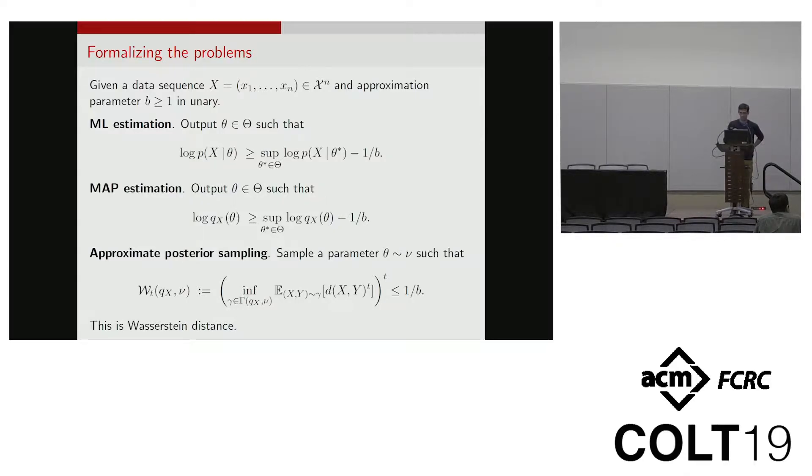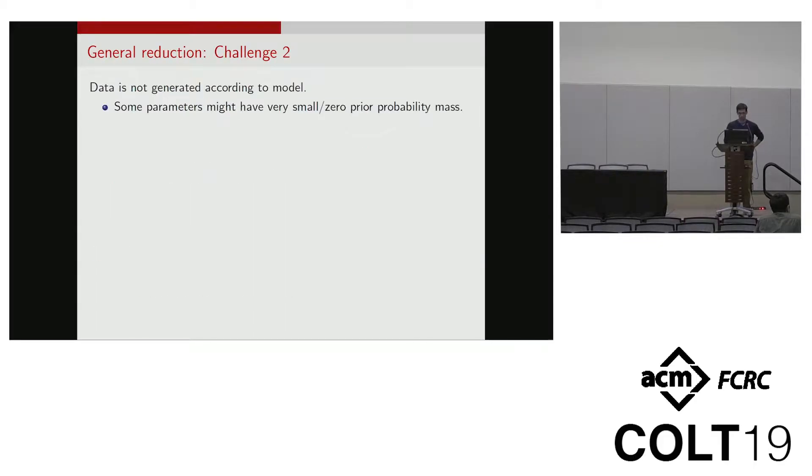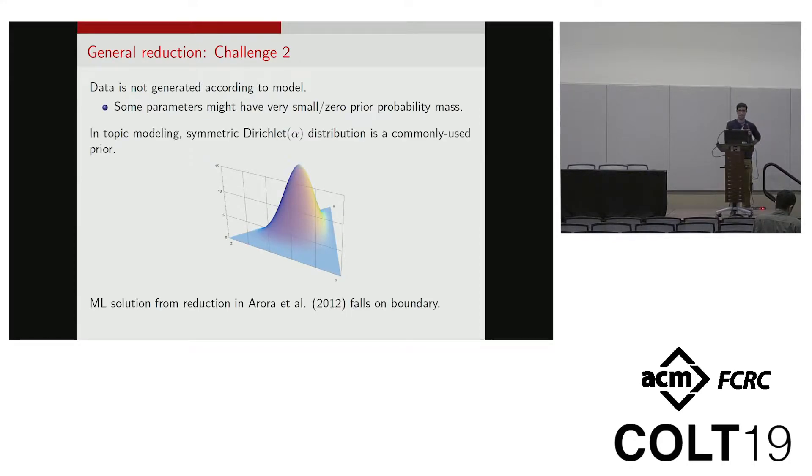So these are how we define our problems, the computational versions of these problems. But the second challenge that we still have to address is that our data isn't actually generated according to the model. All these convergence results hold modulo some parameters of measure zero. It turns out that in a lot of cases that we care about, there are parameters that have measure zero. For example, in topic modeling, a very popular prior distribution to put over your topics is a symmetric Dirichlet distribution.